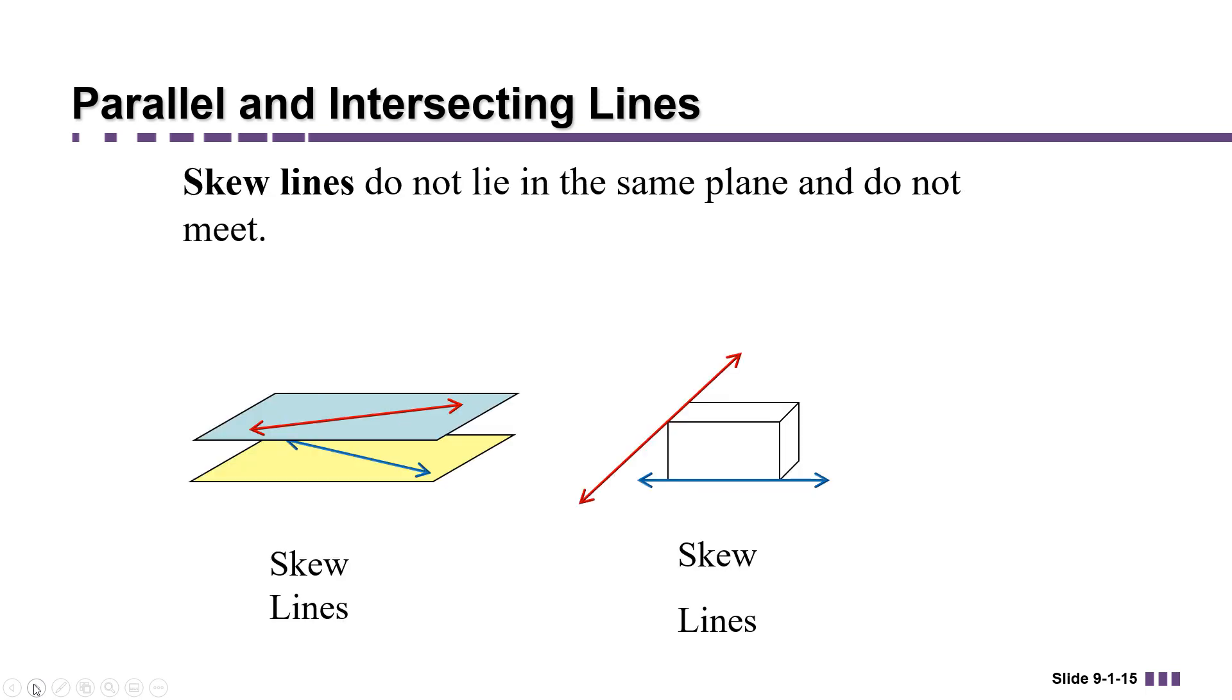There's also another category of lines which do not lie in the same plane and do not meet. They're called skew lines. The interesting thing about skew lines is that they're neither parallel nor intersecting.